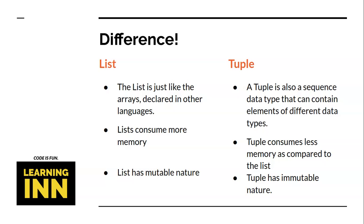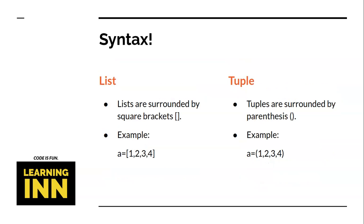We will get to know the terminology of mutable versus immutable later on. The basic syntax: a list is represented with square brackets and a tuple with parentheses. An example is shown on screen so you can learn and code accordingly.